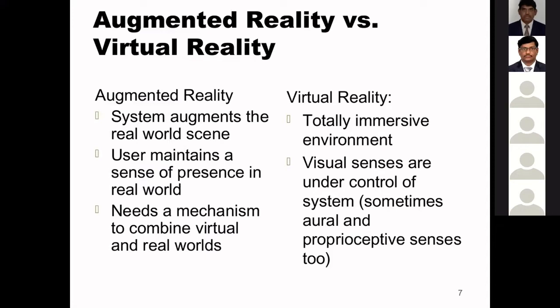Augmented reality versus virtual reality: an AR system augments the real world scene, while virtual reality is a totally immersive virtual environment. In AR, the user maintains a sense of presence in the real world. In VR, all visual senses are under control of the system, and we can interact with the virtual environment. AR needs a mechanism — like a smartphone or projector — to combine virtual and real worlds, whereas VR requires a headset.